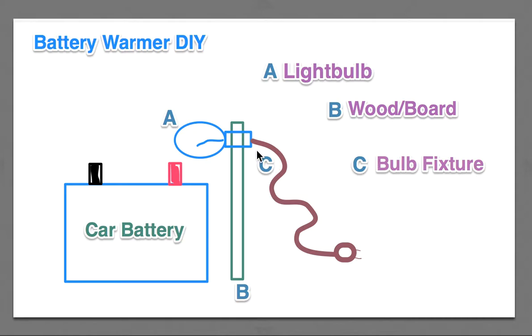And then you've got C, which is the bulb fixture. That's where the bulb screws into the socket, and then that would plug into your electrical outlet.